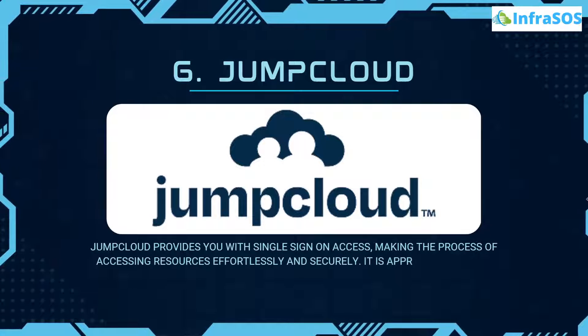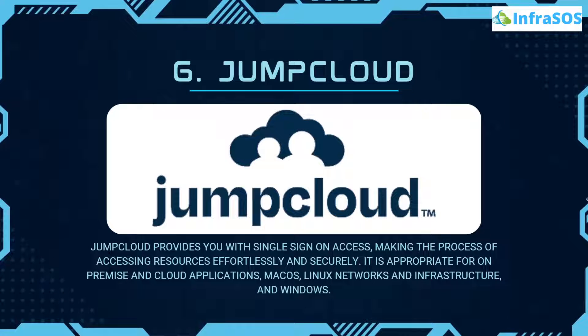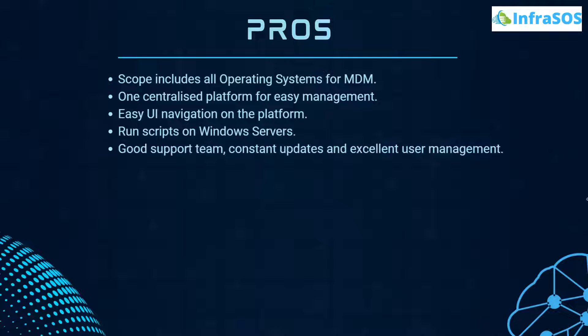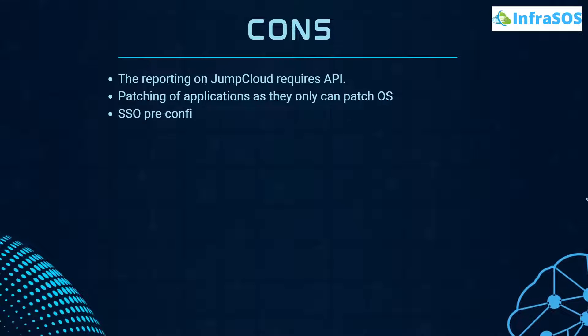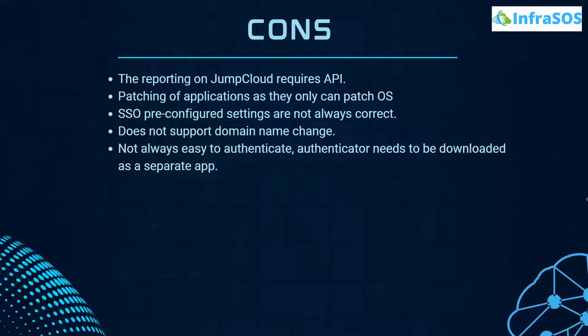At number 6 we have JumpCloud. JumpCloud provides single sign-on access making the process of accessing resources effortless and secure. It is appropriate for on-premise and cloud applications, macOS, Linux networks and infrastructures, and even Windows. Pros include one centralized platform for easy management, MDM scope covering all operating systems, easy UI navigation, and the ability to run scripts on Windows Server. Cons include that reporting requires API, it requires patching of applications as it can currently only patch the OS, SSO pre-configured settings are not always correct, and it does not support domain name changes.